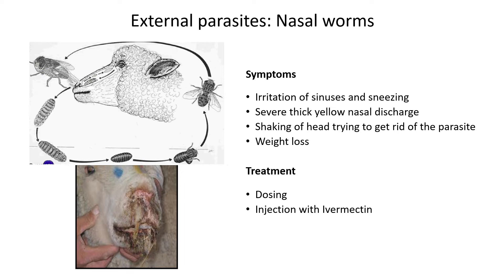Other types of external parasites include the nasal worm. As the name suggests, it's a worm that affects the nose of certain animals. If a diagram or picture shows the parasite infecting the nose area of an animal, identify it as the nasal worm. Even though the nasal worm technically becomes a fly — going through a pupa stage — we call it the nasal worm because it's the worm stage that affects the nose area.